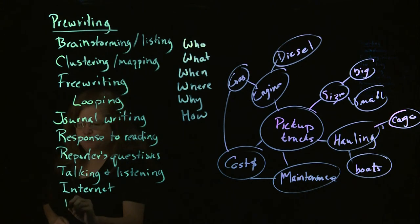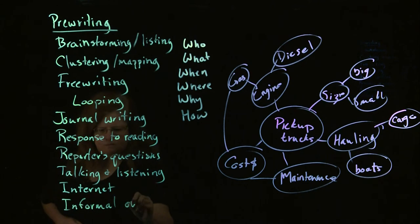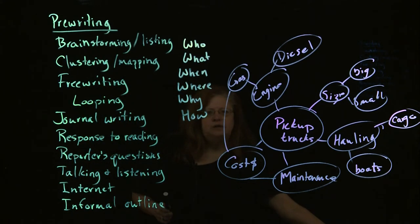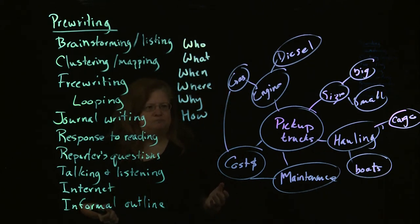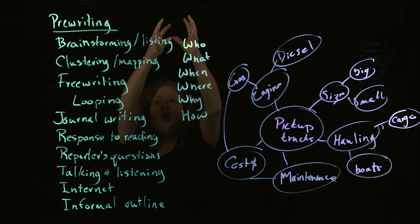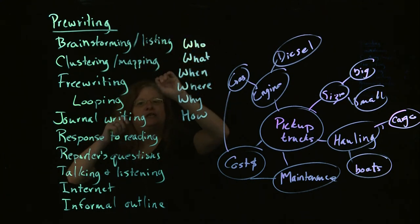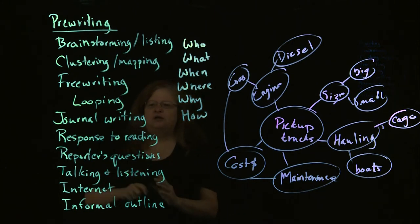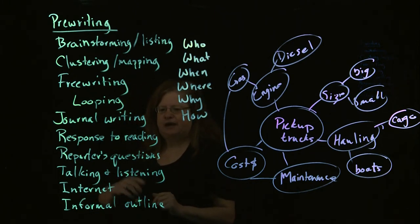Then finally, we have the informal outline. Now, sometime in your past academic history, you may have been taught about a formal outline. That's the thing where you start at the beginning with the big Roman numeral one up at the top, and then A, B, and C, and one, two, three below that and so forth. An informal outline doesn't have to be that structured.